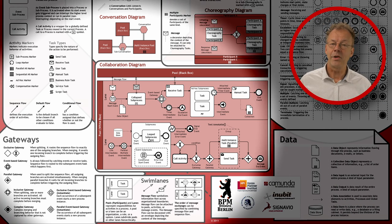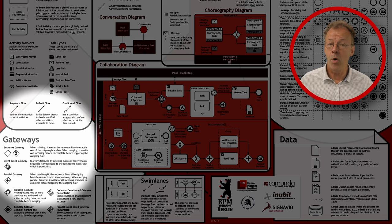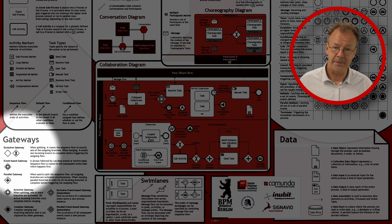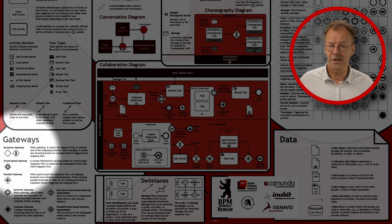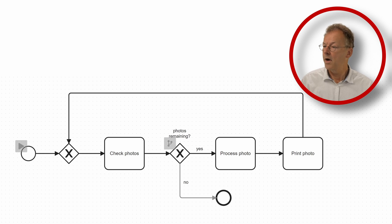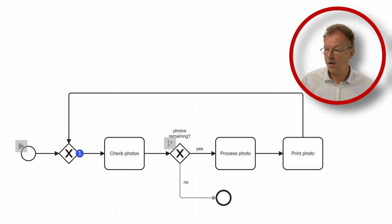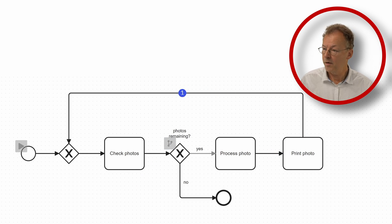In BPMN we can model this with a splitting and merging exclusive gateway. Let's first look at the pretest solution. Here in our BPMN diagram, we first start with check photos. And then we go, yes, process photo, print photo. Go back to check photos. And then we find that we have no remaining photos and the process is finished.